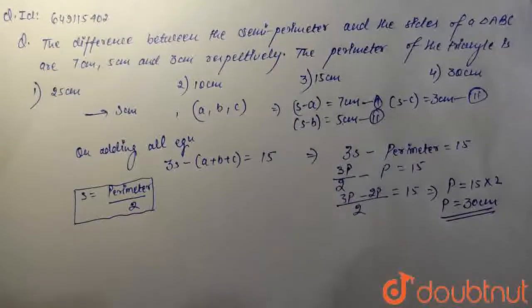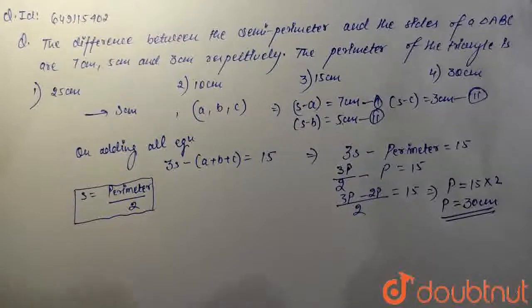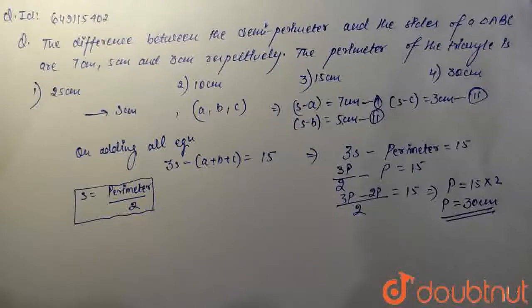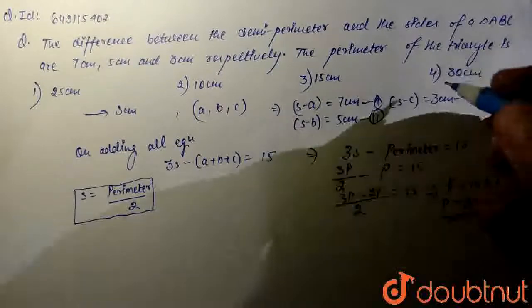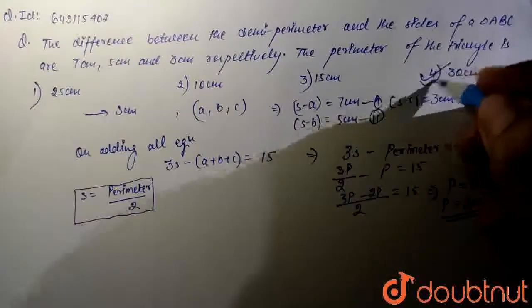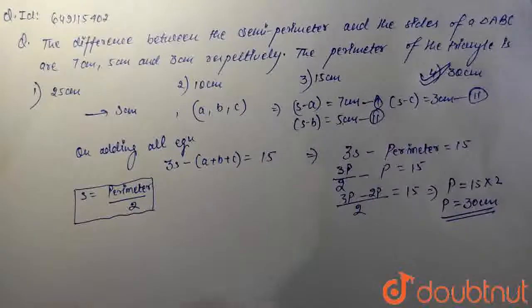And what is P? P is your perimeter of the triangle. So if you look at the options, which option is matching? This is the fourth option — 30 cm — so the fourth option is the correct answer.